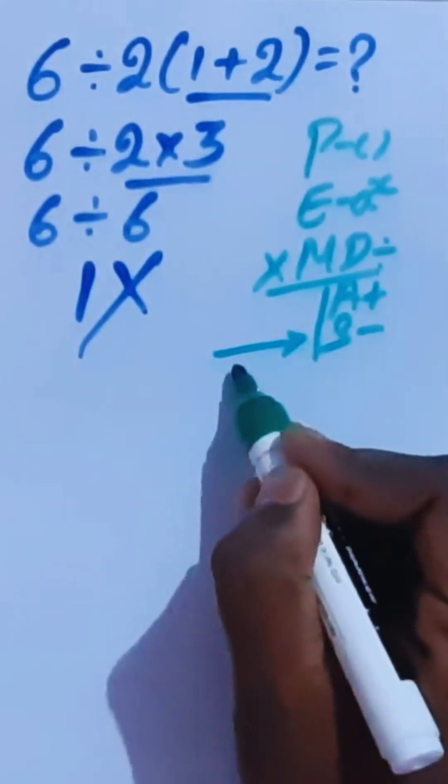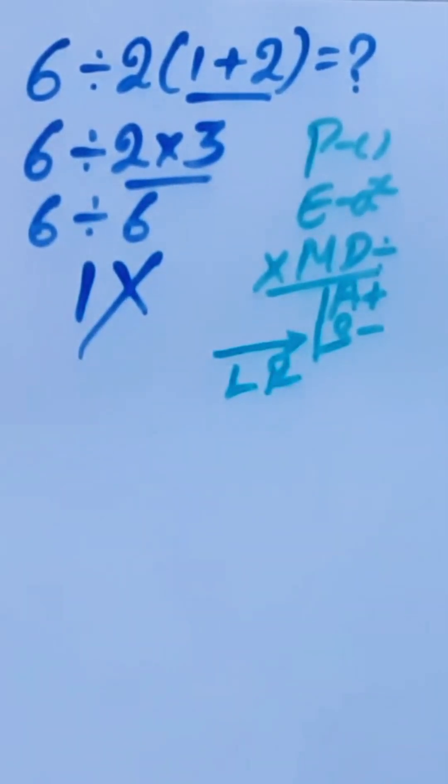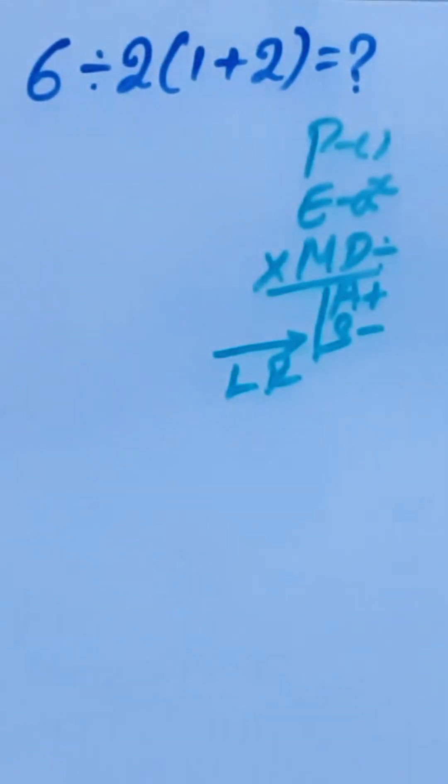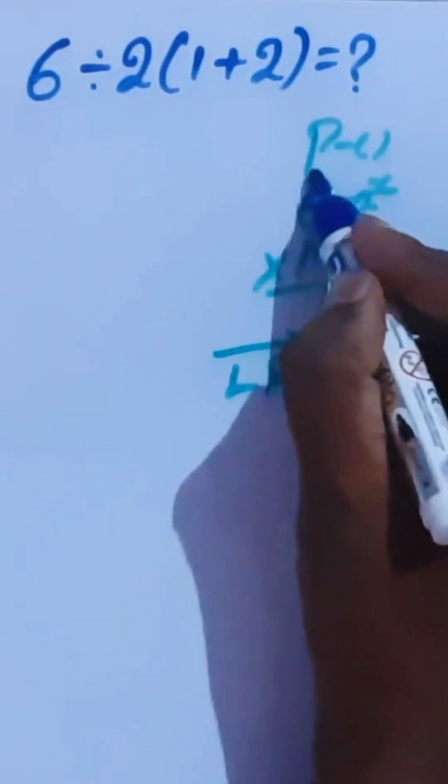For operations with equal priority, we introduce the left-to-right rule. Now we'll solve this problem correctly using order of operations. As per PEMDAS, brackets have the highest priority, so we do this before any other operation.